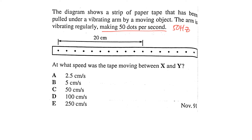In the next question, the ticker tape timer makes 50 dots per second, so that's 50 hertz. We can find the period — the time it takes to make the next dot — which is 1 over f, 1 over 50, giving 0.02 seconds.